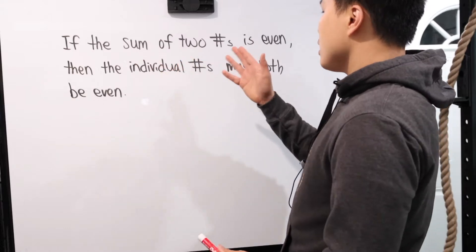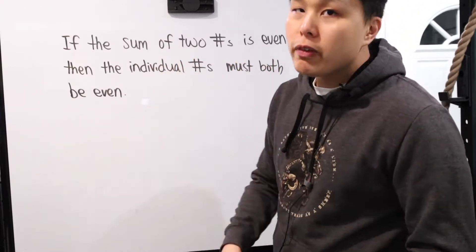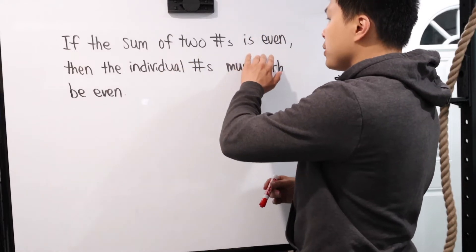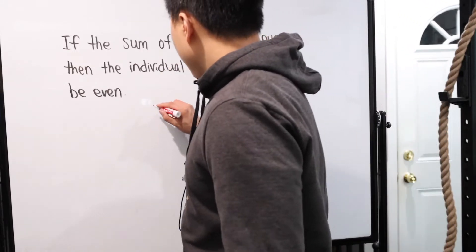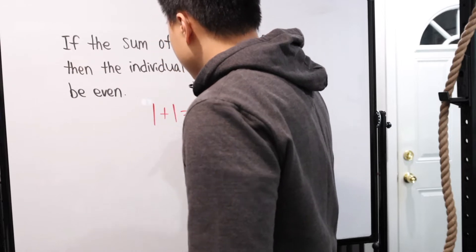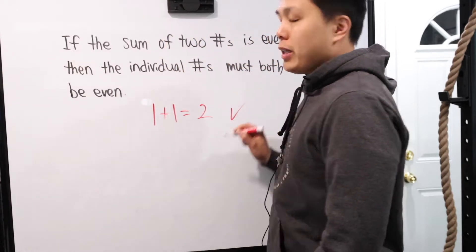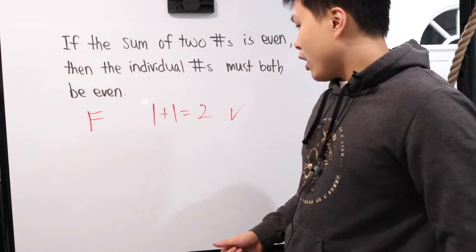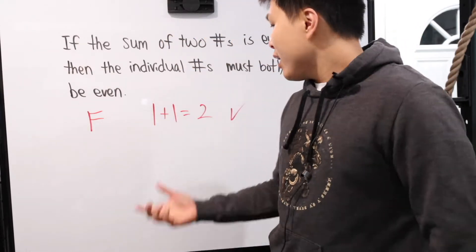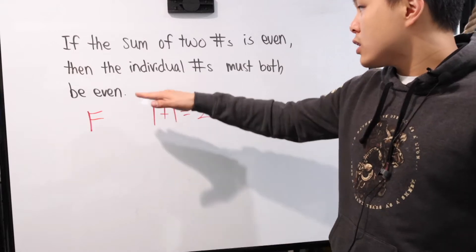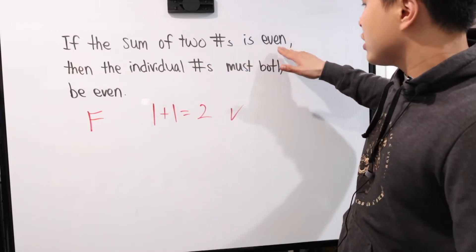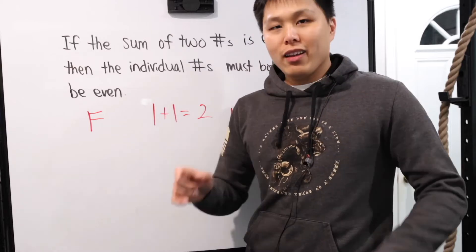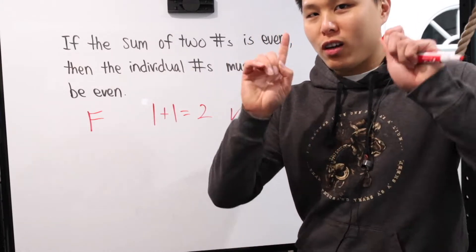If it's saying that the sum of two numbers is even, then the individual numbers must be even, then we choose something that is not even. In this case, we just want the end result to be even. Why not? One plus one equals two. Boom. That's it. You're done. This is a false statement, because guess what? One is odd, one is odd. Add them together and your end result is even. So this statement that because the end result is even, the individual numbers must both be even, false. That is it. That's why you want it to be false always.